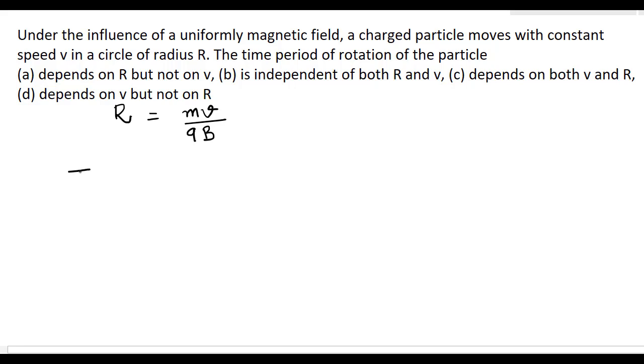And so the time period T can be found like this: T is equal to 2πR, this is the circumference, divided by v.